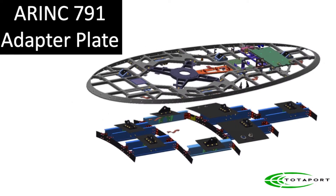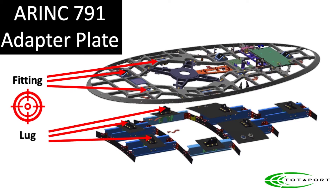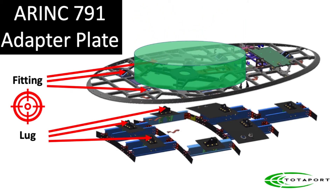An adapter plate provides the interface to the airplane lugs and supports the outside antenna equipment. Here are some lugs bolted to the airplane and matching fittings on the adapter plate. They join in a precise manner and relative space as prescribed by ARINC 791. The antenna swept volume is shown here, and supporting equipment can be installed back there.